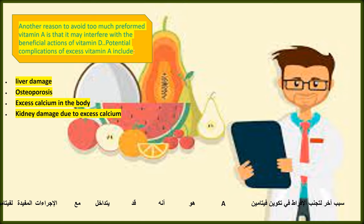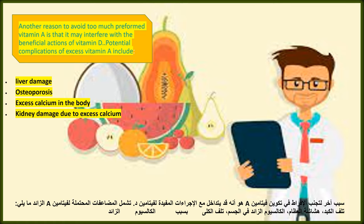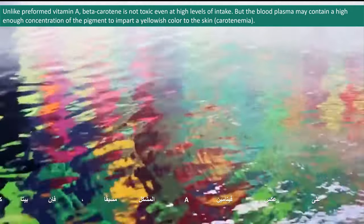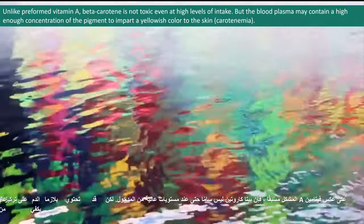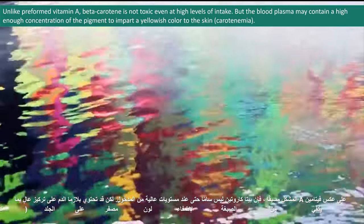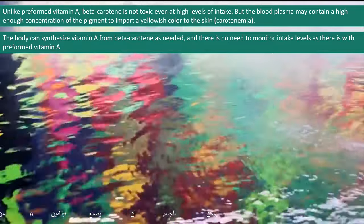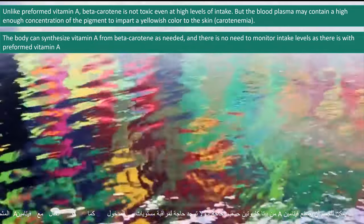Another reason to avoid too much preformed vitamin A is that it may interfere with the beneficial actions of vitamin D. Potential complications of excess vitamin A include liver damage, osteoporosis, excess calcium in the body, and kidney damage due to excess calcium. Did you know? Unlike preformed vitamin A, beta-carotene is not toxic even at high levels of intake, though blood plasma may contain a high enough concentration of the pigment to impart a yellowish color to the skin, called carotenemia. The body can synthesize vitamin A from beta-carotene as needed, and there is no need to monitor intake levels as there is with preformed vitamin A.